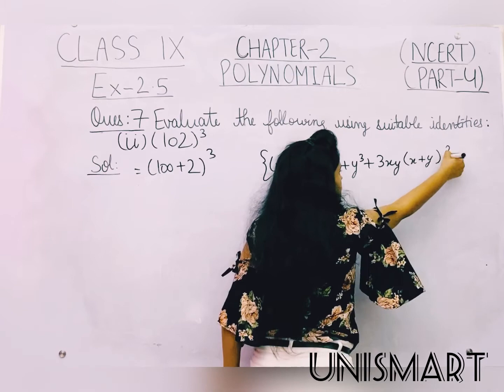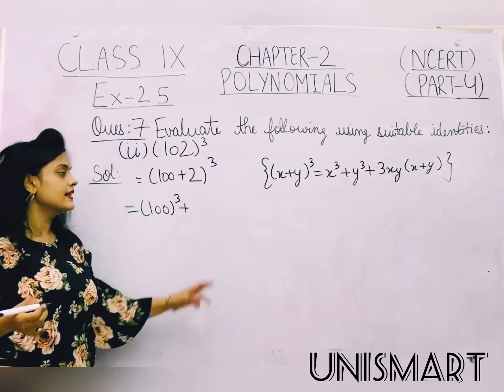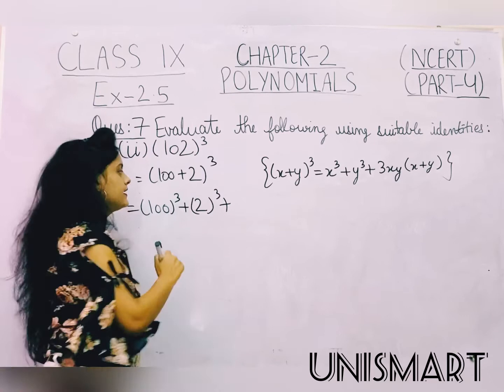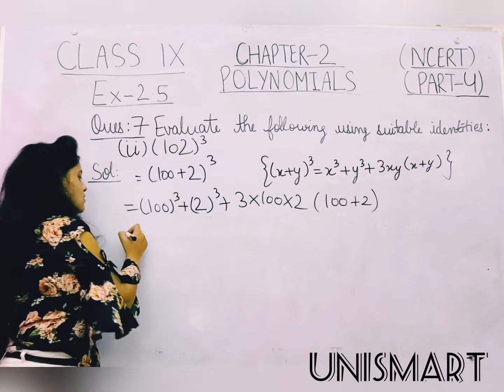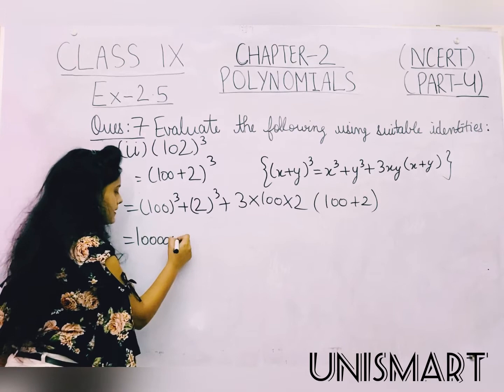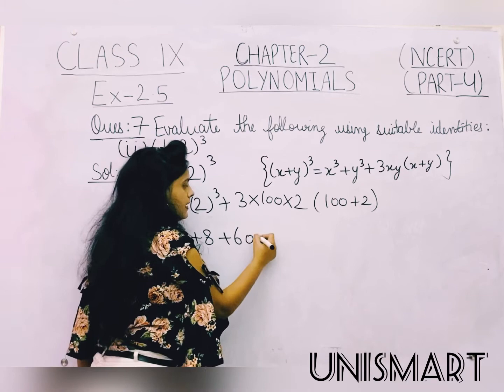So yeh hai X ka cube. X is 100, so yeh ho jaega 100 ka cube. Plus Y is 2, so yeh ho jaega 2 ka cube. Plus 3XY — so 3, X is 100 and Y is 2. Aur bracket mein X plus Y, that is 100 plus 2. So aage se solve karte hain: 100 ka cube kya hoga? 10 lakh — means 1 ke baad 6 zeros. 2 ka cube hai 8. 3 into 2 is 6, 6 into 100 is 600. And 100 plus 2 is 102.